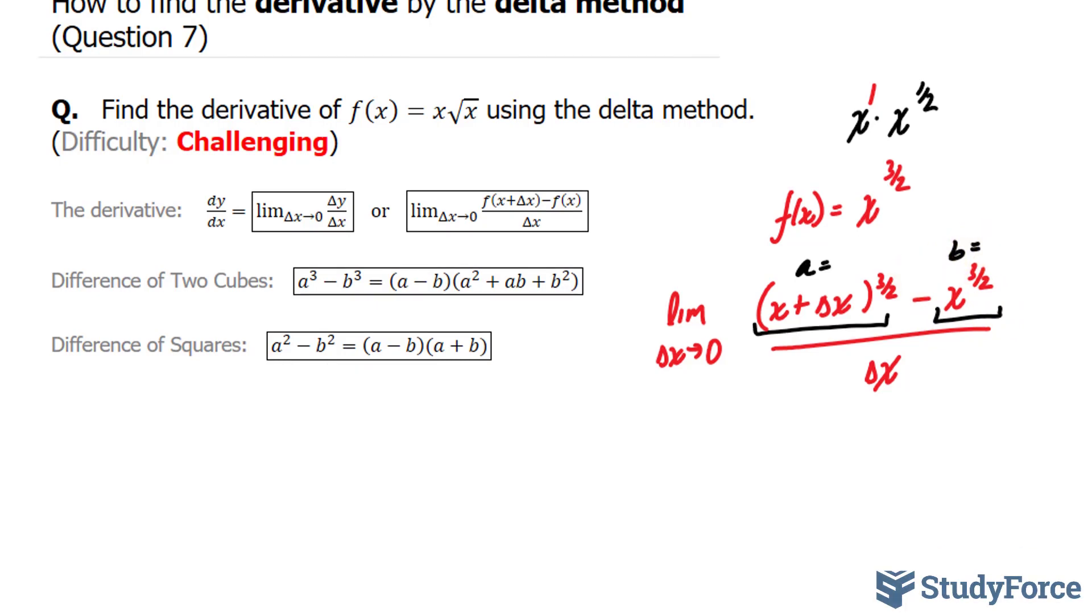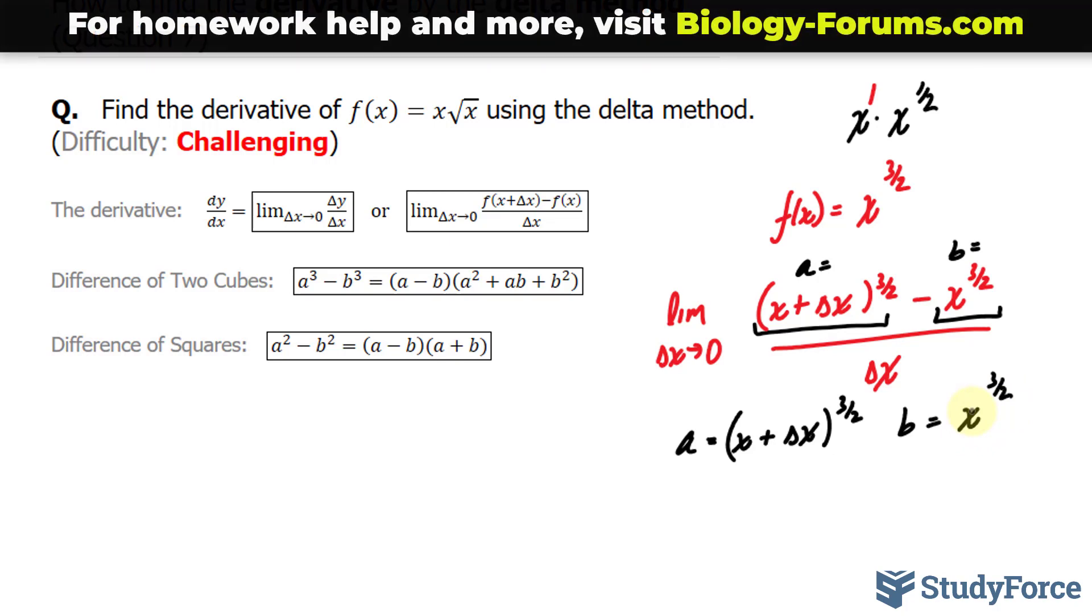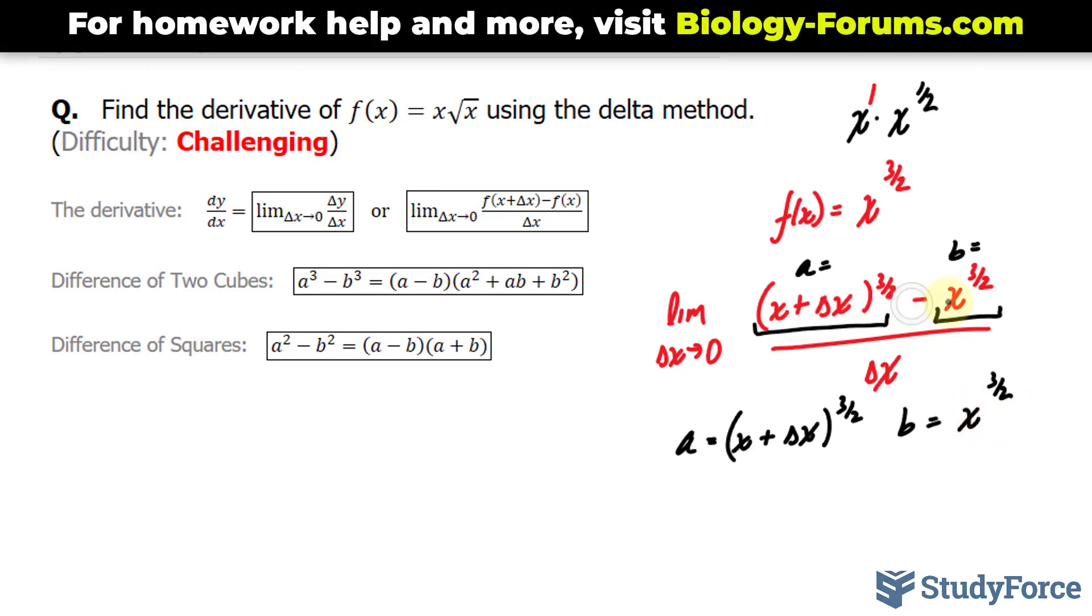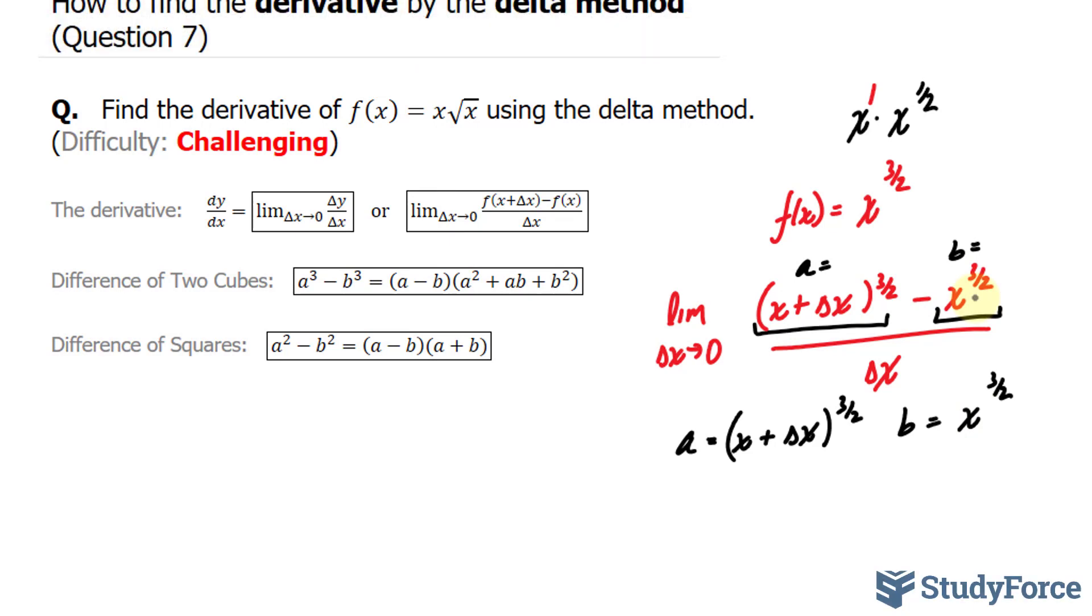And I chose these letters arbitrarily. You could have chosen any letters that you like. Now if I set a equal to x plus delta x raised to the power of three over two, and b is equal to x to the power of three over two. What I want to do, since I've made this a minus b, is make it look like a squared minus b squared, these two terms. And then rearrange the difference of squares formula into a minus b is equal to a squared minus b squared over a plus b.